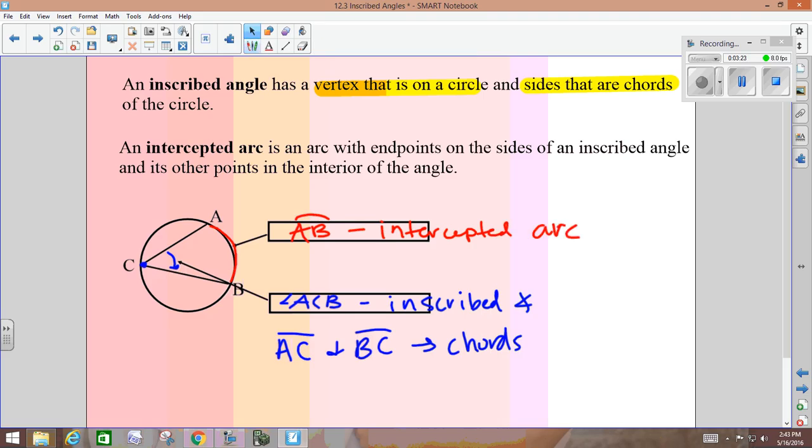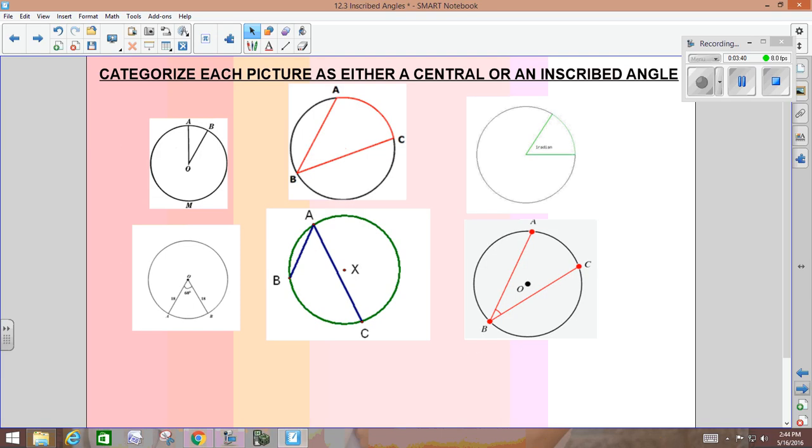So inscribed angles go with intercepted arcs. Inscribed, the vertex has to be on the circle. The bottom third of the page, all you're doing is identifying whether the circle has an inscribed angle or a central angle. So you can put a C on the picture if it's a central angle, or you can put an I on the picture if it's showing an inscribed angle on those bottom six.